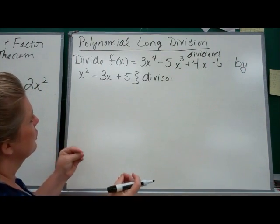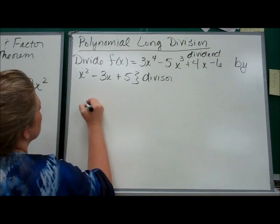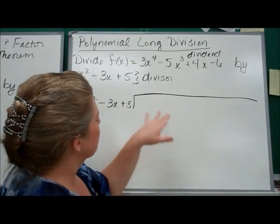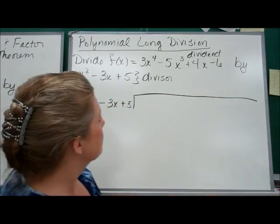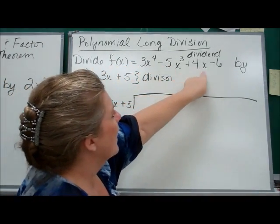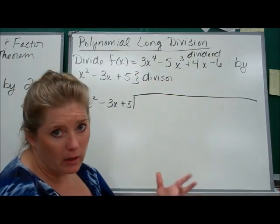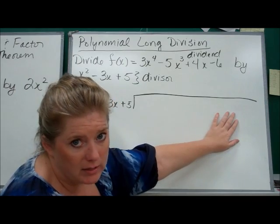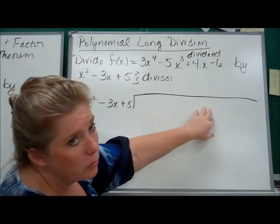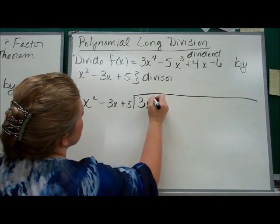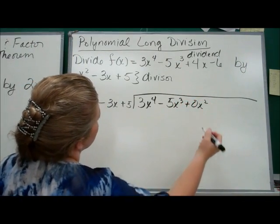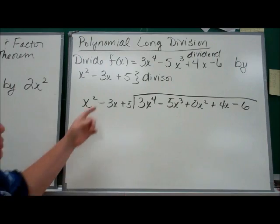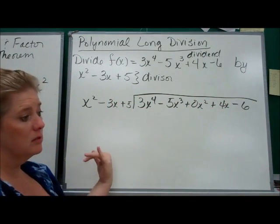When you're setting up polynomial long division, you start with the divisor — that goes outside the box. So you're going to have x squared minus 3x plus 5, and then you're going to make your little division box, and write your polynomial inside — the dividend goes inside the division box. Now, look at the polynomial: is there a term missing? Polynomial functions go by decreasing degree, and there's an x squared term missing. So we have to include a 0x squared when we write down the dividend. So this is going to be 3x to the fourth minus 5x cubed plus 0x squared plus 4x minus 6. Your quotient's going to be on top of the fraction bar, just like in numeric long division.